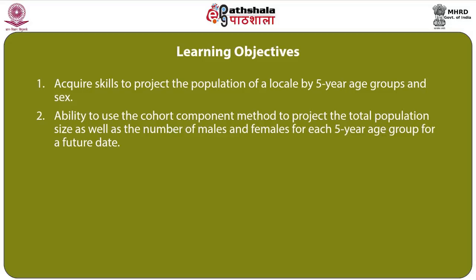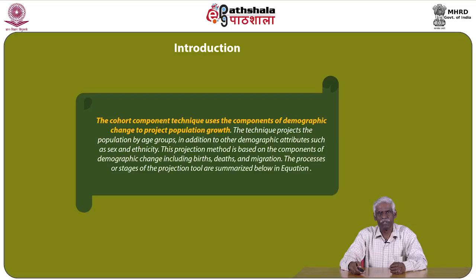The learning objectives of this module are to acquire skills to project the population of a local area by 5-year age groups and sex, and to enhance your abilities in adapting and using the cohort component method to project the total population size as well as the number of males and females for each 5-year age group for a specified future date. The cohort component technique uses the components of demographic change to project population growth, projecting the population by age groups and other demographic attributes such as sex and ethnicity.